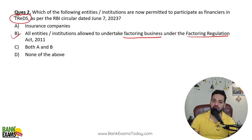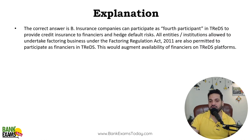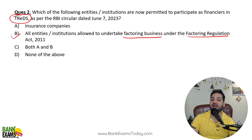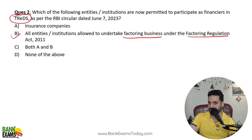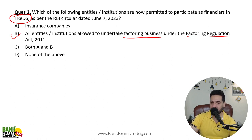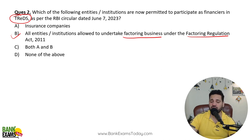Additionally, insurance companies can provide credit insurance for these loans and credits on the TReDS platform. So two important points from that circular: factors can finance these bills, and insurance companies can provide credit insurance.